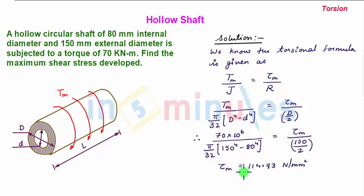This is the maximum shear stress produced due to the torque of 70 kNm. Maximum shear stress occurs at the extreme outer layer of the hollow shaft. Thanks for watching in 5 minutes.